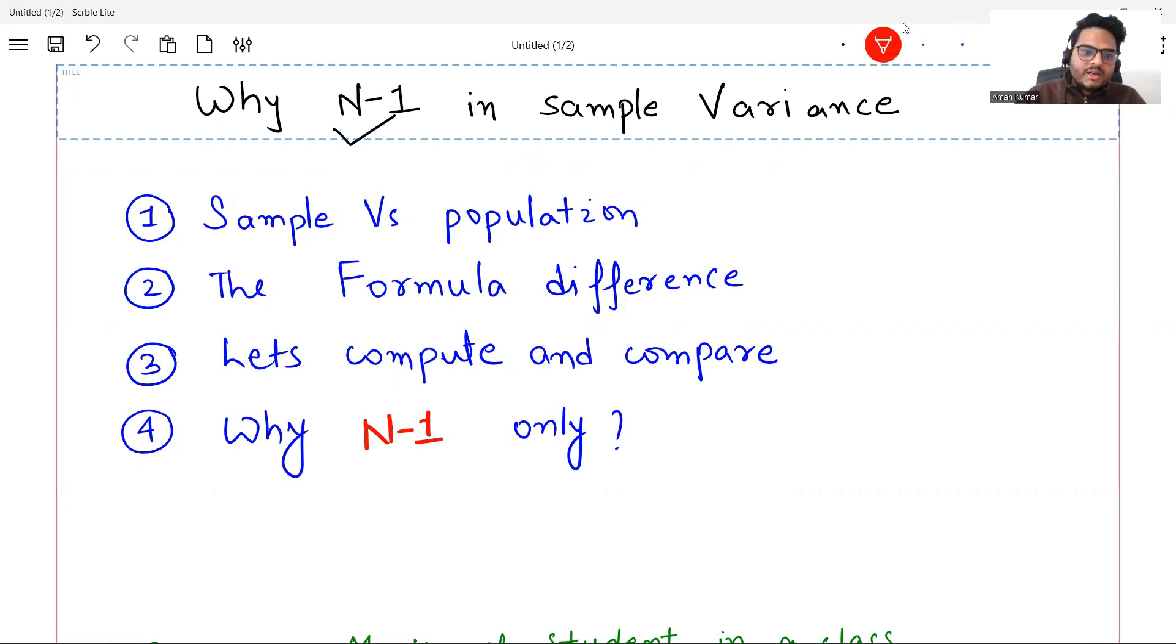We will first understand what is the difference between sample and population and how the estimation works in inferential statistics. Then we will see the formula difference. Then we will compute by hand, manual computation, and see what is going wrong when we compute with n. And then we will understand why n-1 only, why not n-2, n-3, or n plus 1. Let's start.